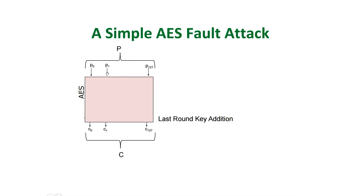Let us take a very simple fault attack on the AES block cipher. AES is probably the most commonly used block cipher today. It takes a 128-bit plaintext as input, labeled P with bits P0 to P127. It performs various operations on this plaintext that depend both on the input and the secret AES key, and after 10 rounds produces a ciphertext C comprising bits C0 to C127.